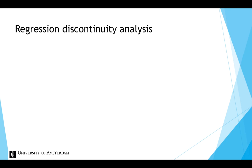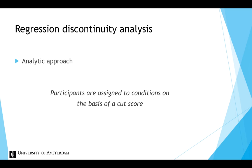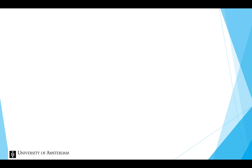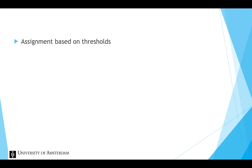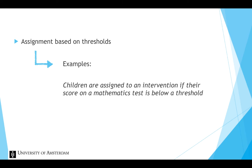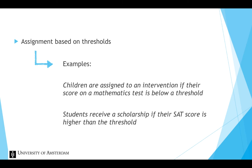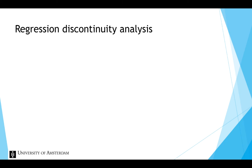Regression discontinuity analysis is an analytic approach for research designs in which participants are assigned to conditions on the basis of a cut score. In daily life, people are often assigned to things like treatments or scholarships based on a threshold — receiving a treatment or scholarship is determined by whether you are below or above a certain threshold on some variable. For example, children could be assigned to an intervention if their score on a mathematics test is below a predetermined threshold, or students receive a scholarship if their SAT score is higher than the threshold. Regression discontinuity analysis is an analytic approach that could be used in such cases.